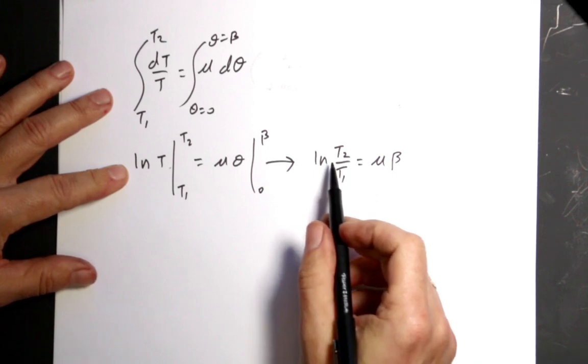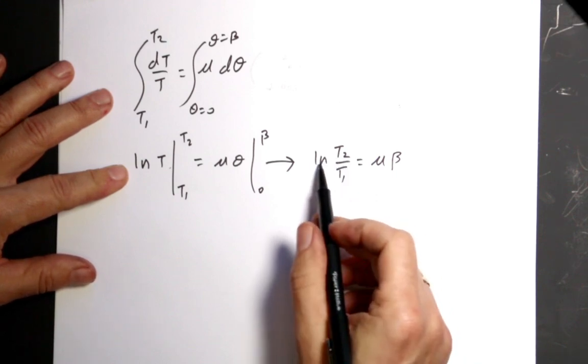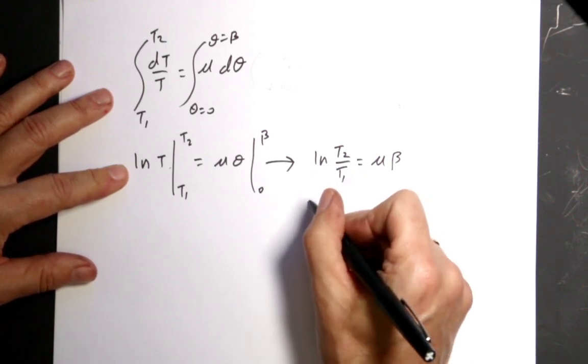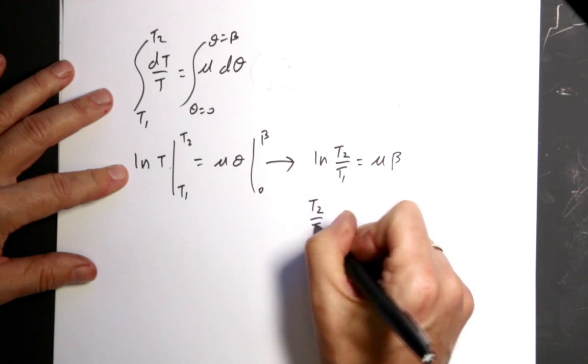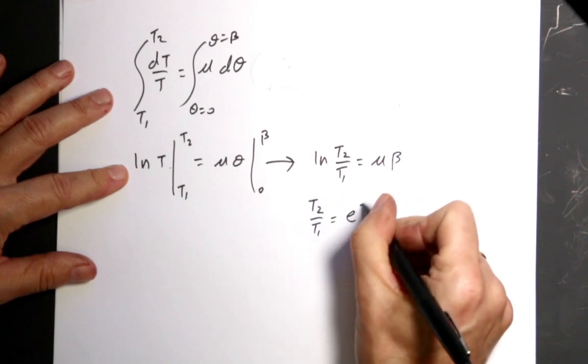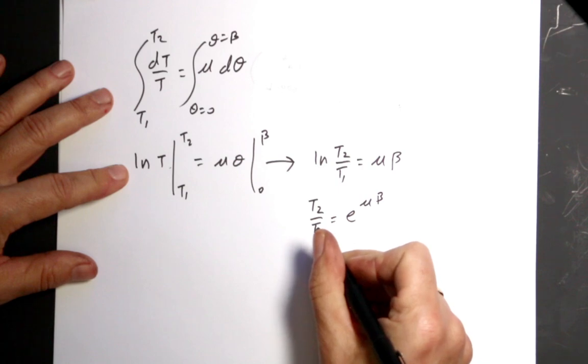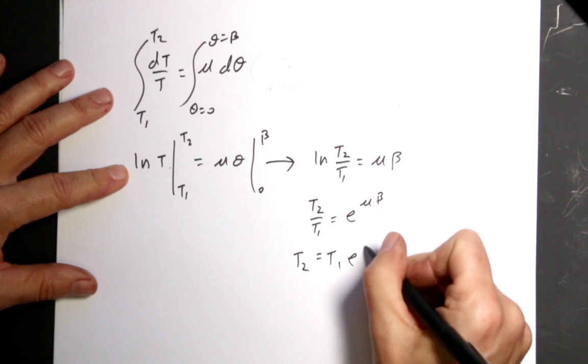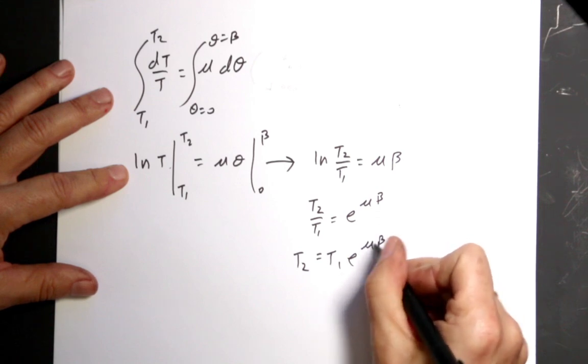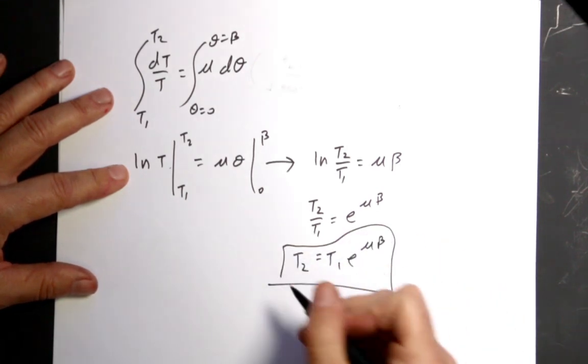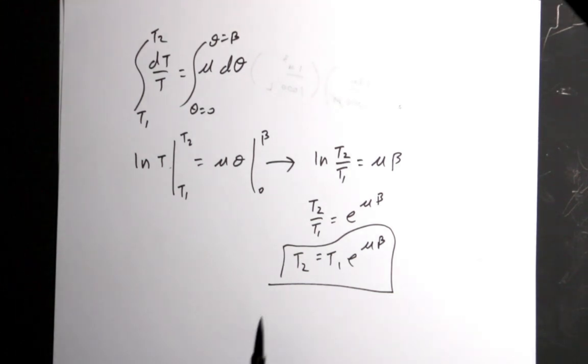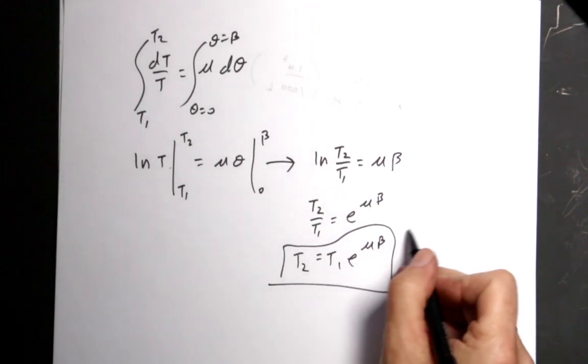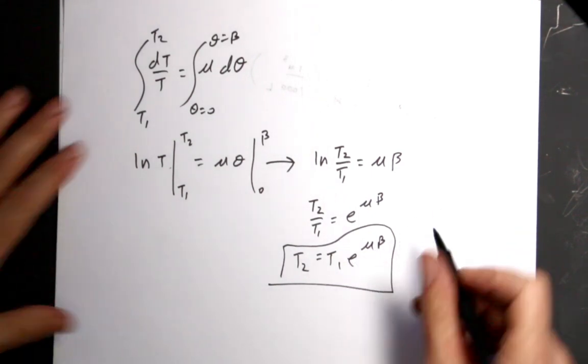Now I want to find the tension, right? So I'm going to take the exponential of both sides. And I get T2 over T1 equals E to the mu beta. And multiply both sides by T1. I get T2 equals T1 E to the mu beta. And that's the Capstan equation. Is that Capstan equation? That's weird. Okay, it must be a person. That's the equation right there.